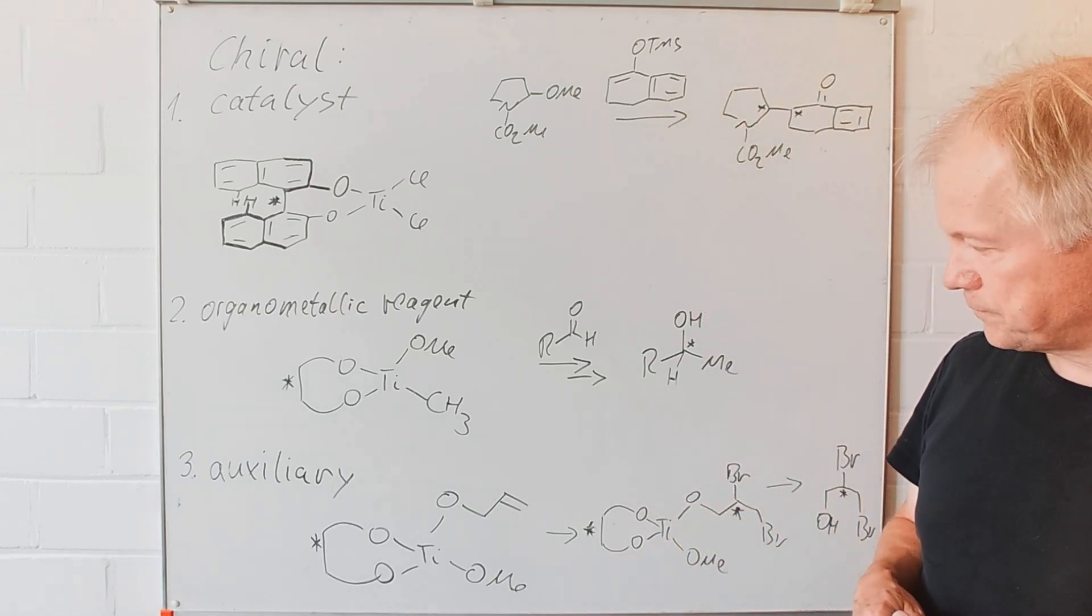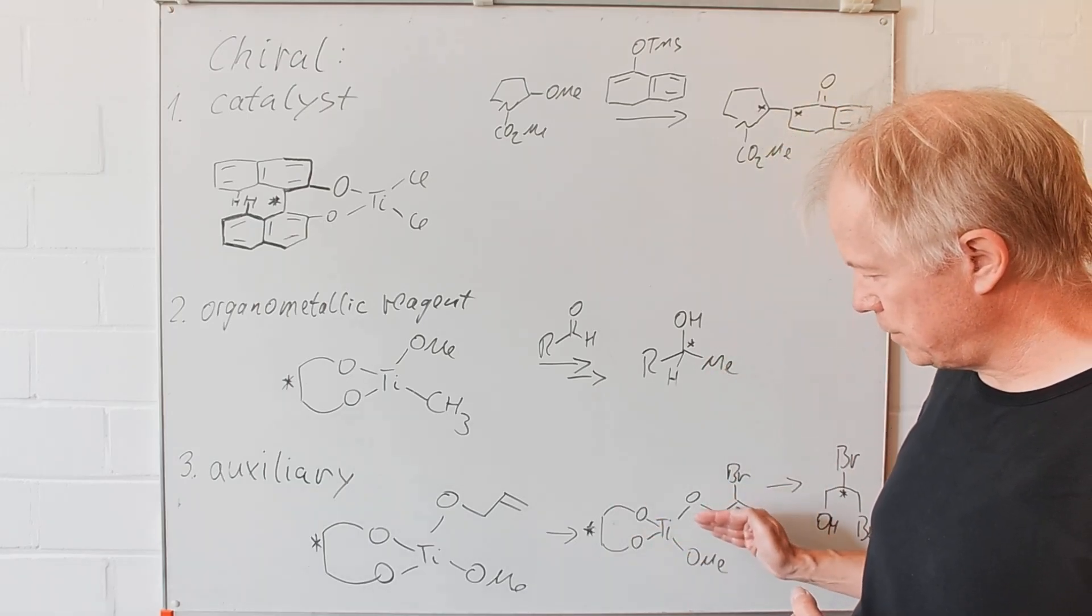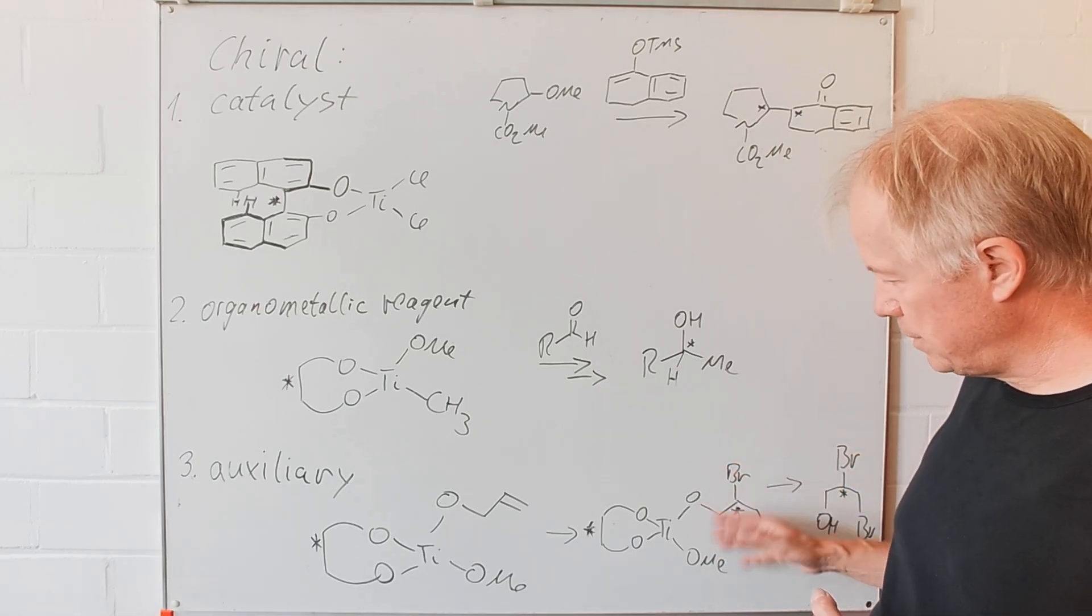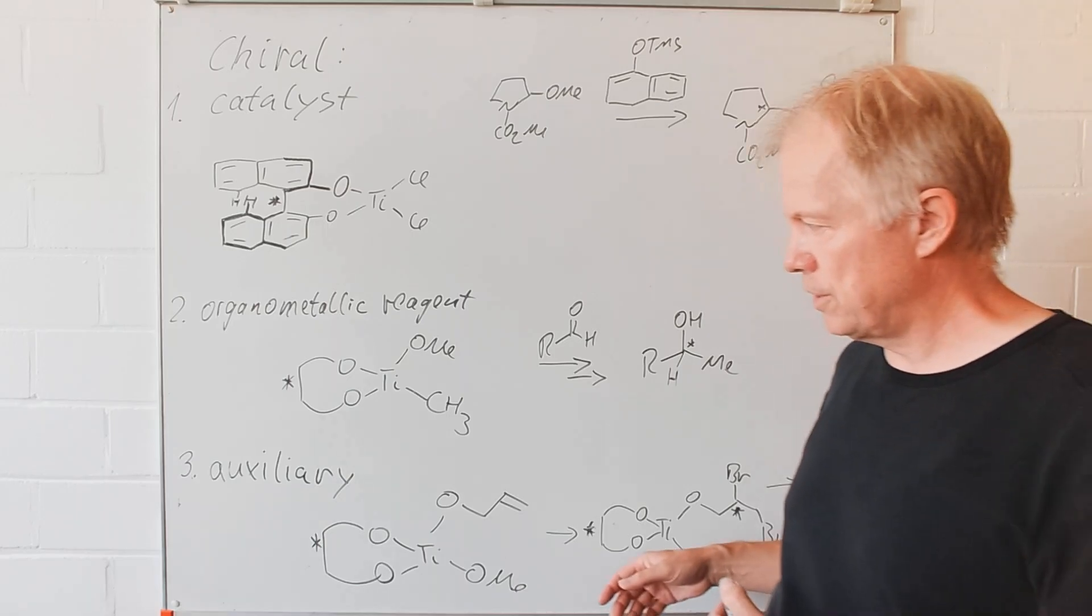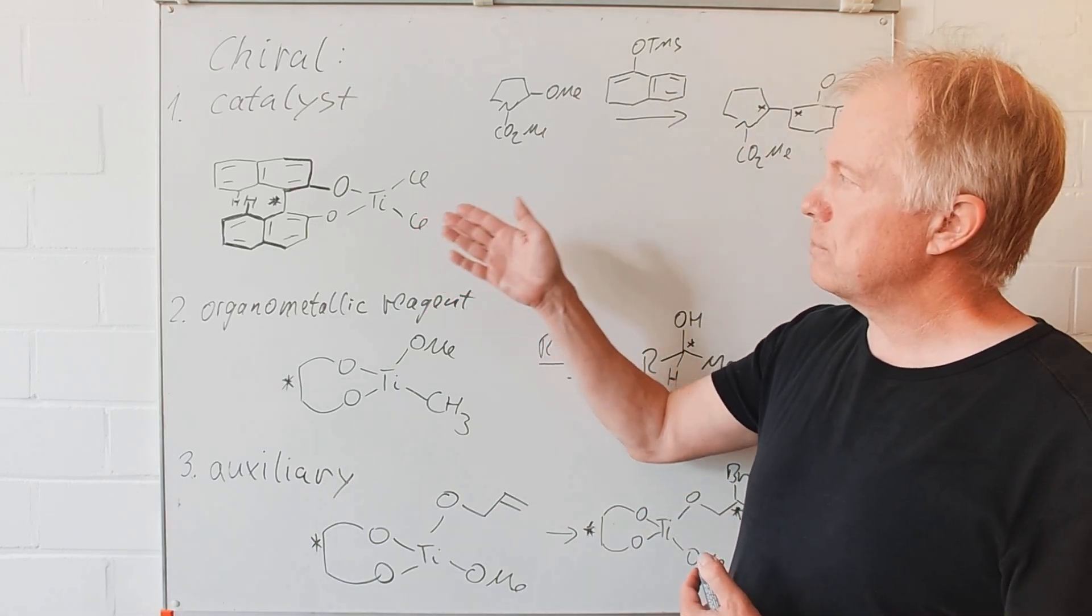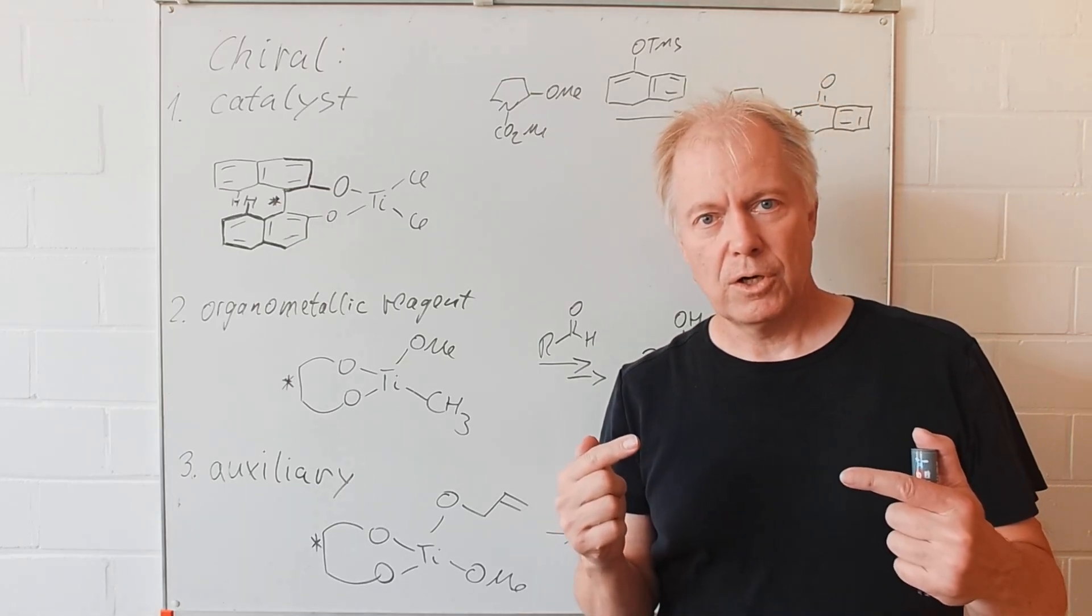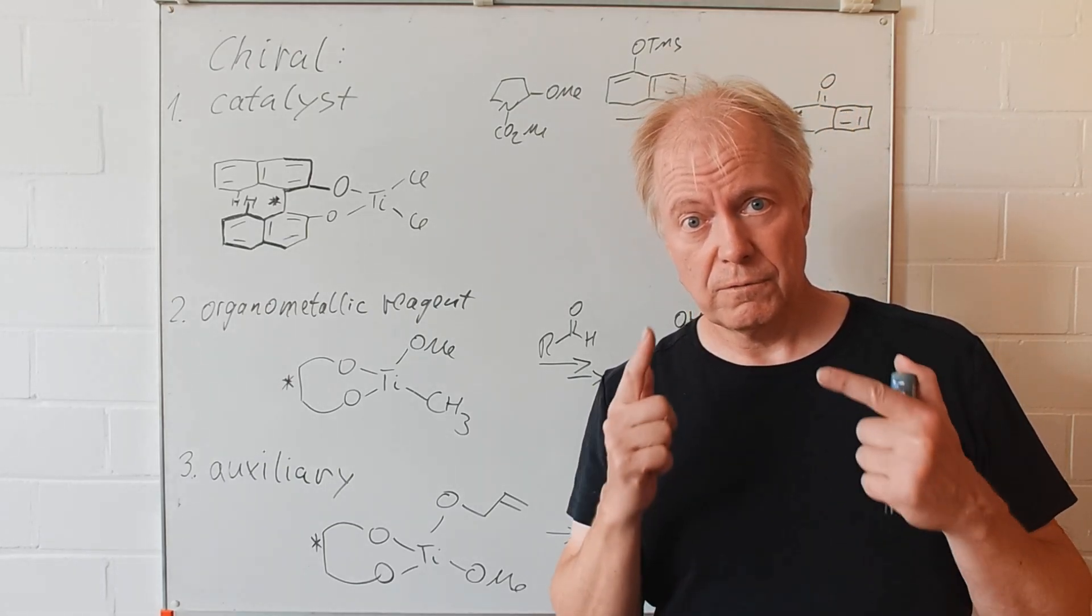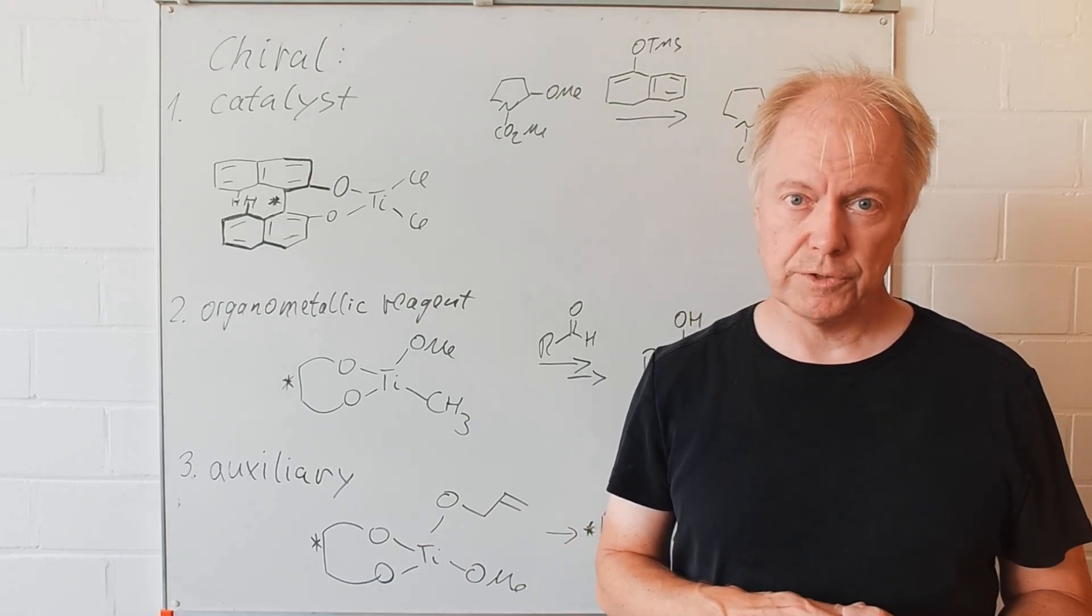So that step, the separation, the easy separation of the intermediary diastereoisomers is the main advantage of the concept of using chiral auxiliaries. Since with a chiral catalyst you always have a mixture of enantiomers and enantiomers are of course far more difficult to separate compared to diastereoisomers. Thanks for listening.